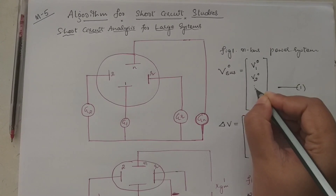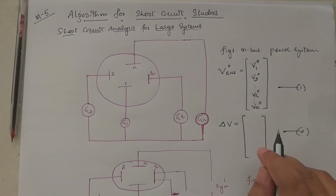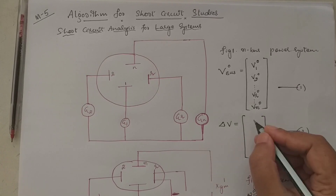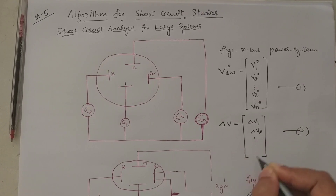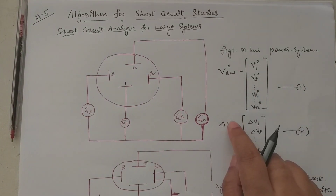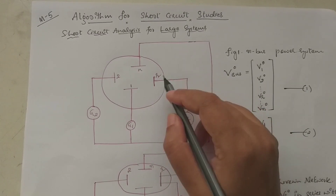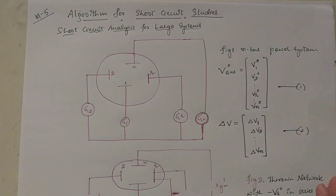The pre-fault voltage V_bus is equal to [V1⁰, V2⁰, ... Vr⁰, ... Vn⁰] — take it as Equation 1. After the fault, the post-fault voltage vector is [ΔV1, ΔV2, ... ΔVn] — take it as Equation 2. Now consider that a short circuit fault occurs at the r-th bus. Figure 2 shows the Thevenin network with generators replaced by transient or sub-transient reactances.